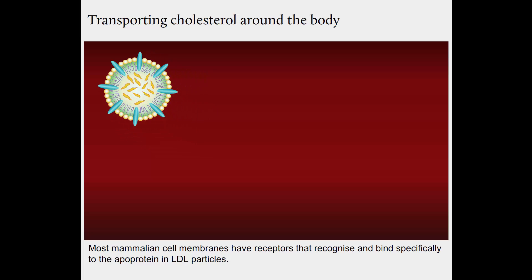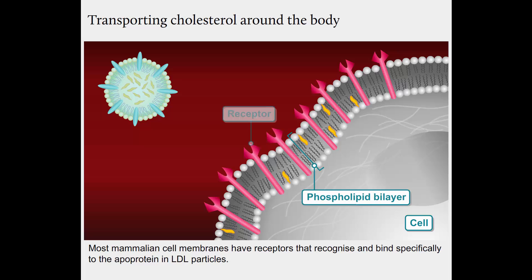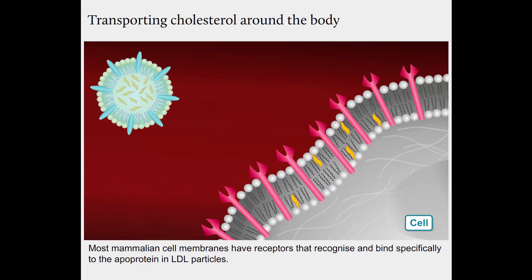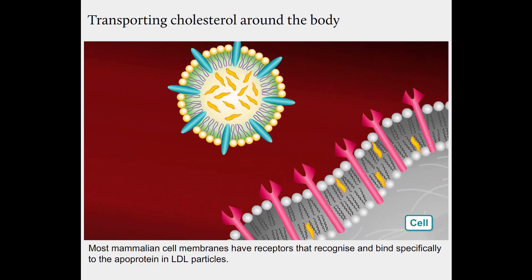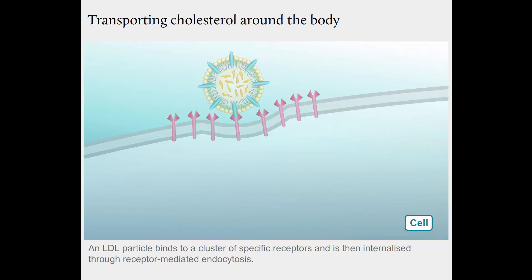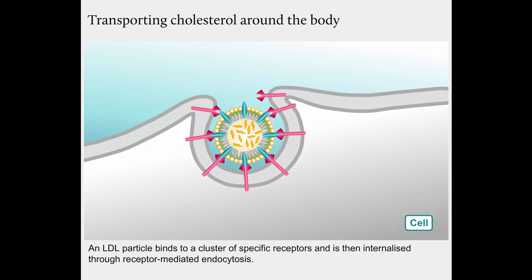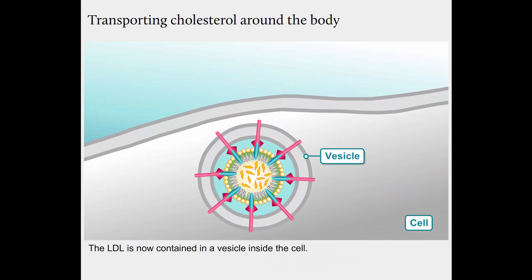Most mammalian cell membranes have receptors that recognise and bind specifically to the apoprotein in LDL particles. An LDL particle binds to a cluster of specific receptors and is then internalised through receptor-mediated endocytosis. The LDL is now contained in a vesicle inside the cell.